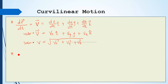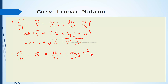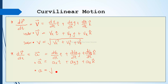If we differentiate the velocity vector with respect to time, we get the acceleration vector, which is equal to (dVx/dt)î + (dVy/dt)ĵ + (dVz/dt)k̂, or simply a = ax î + ay ĵ + az k̂. The magnitude of acceleration is the square root of ax² + ay² + az².